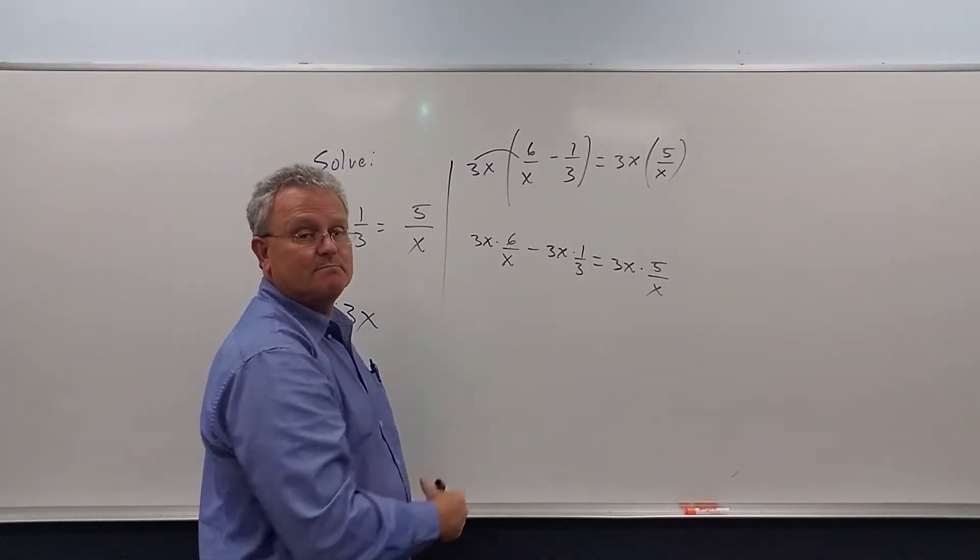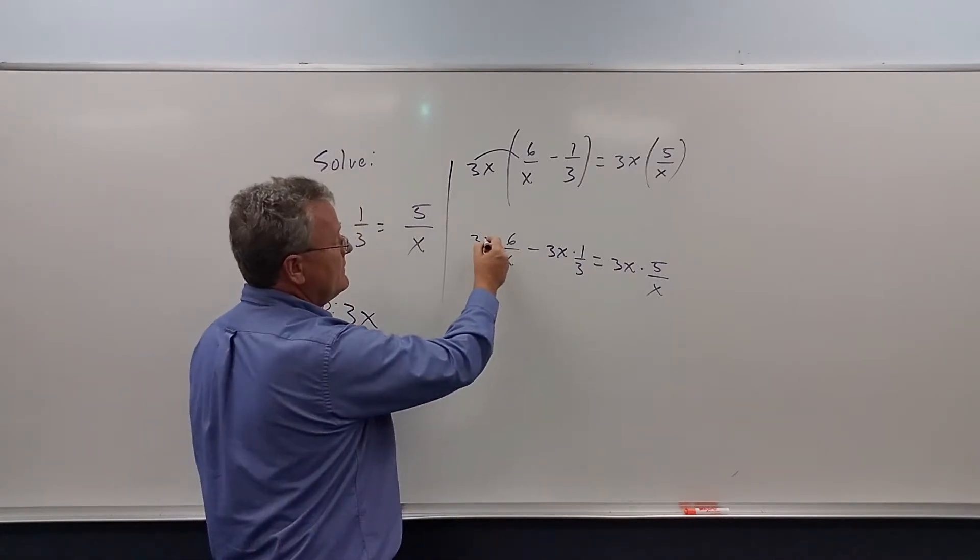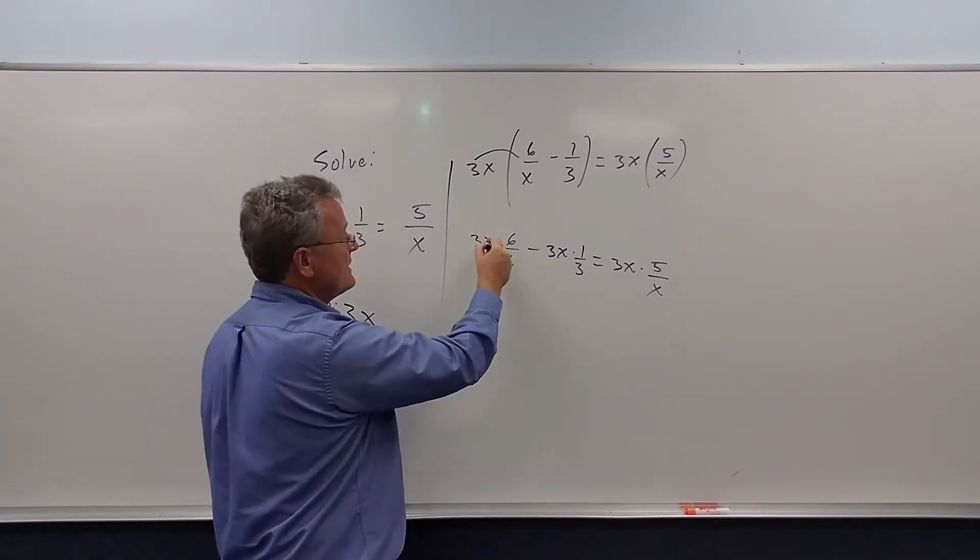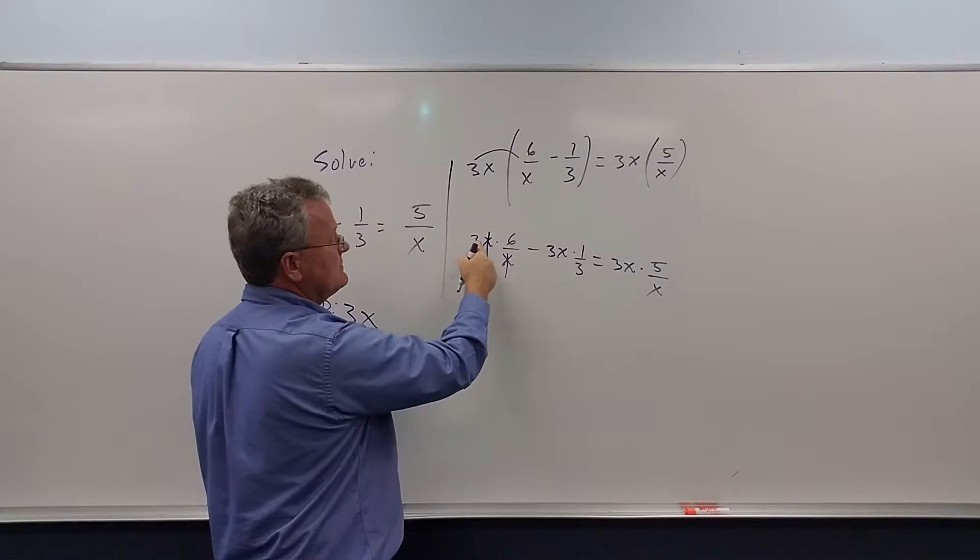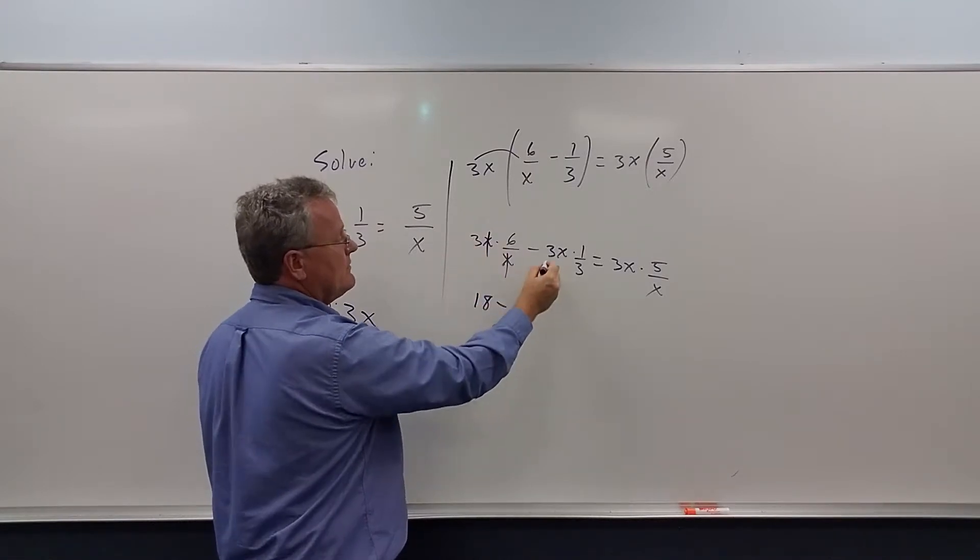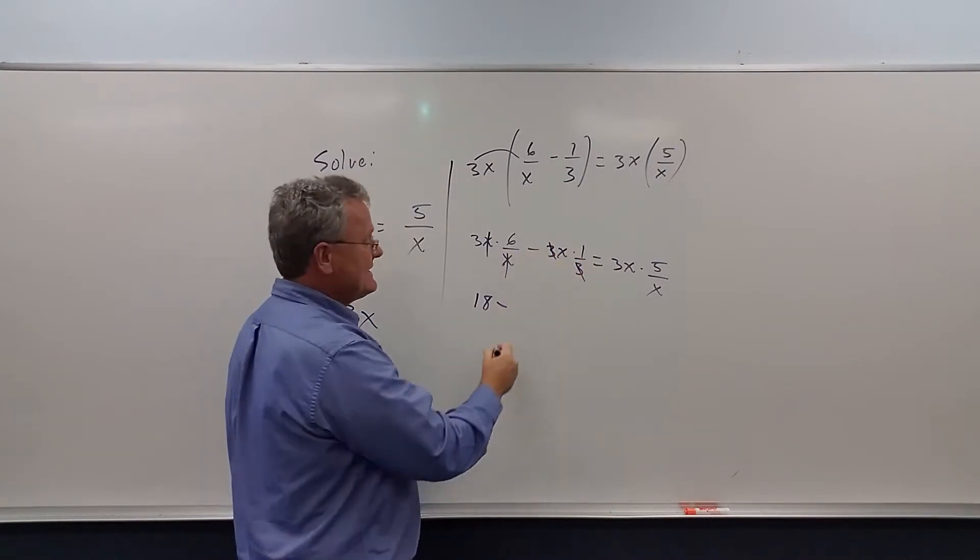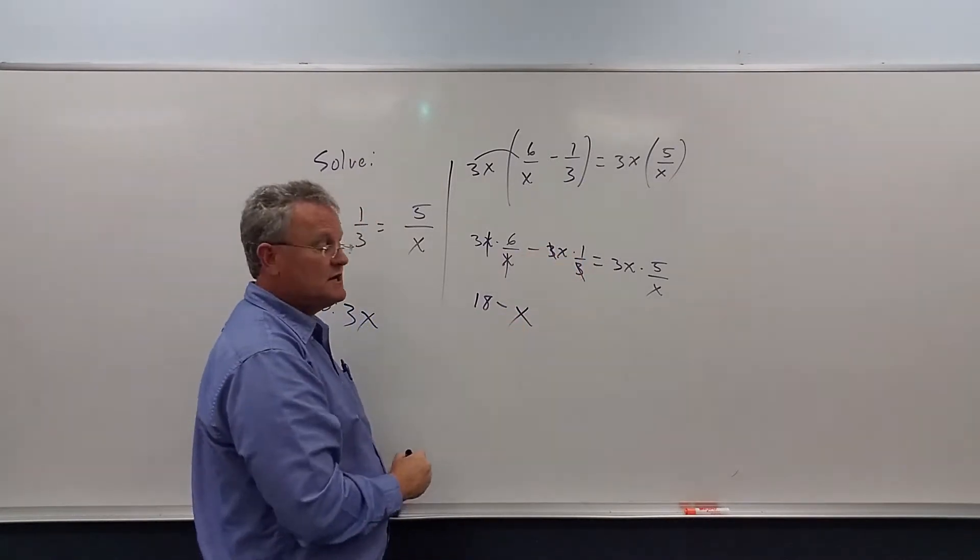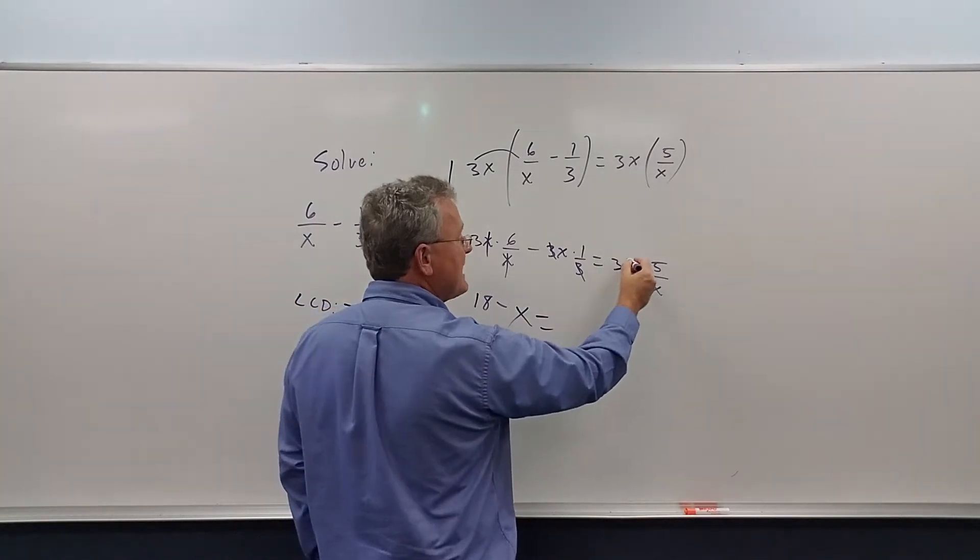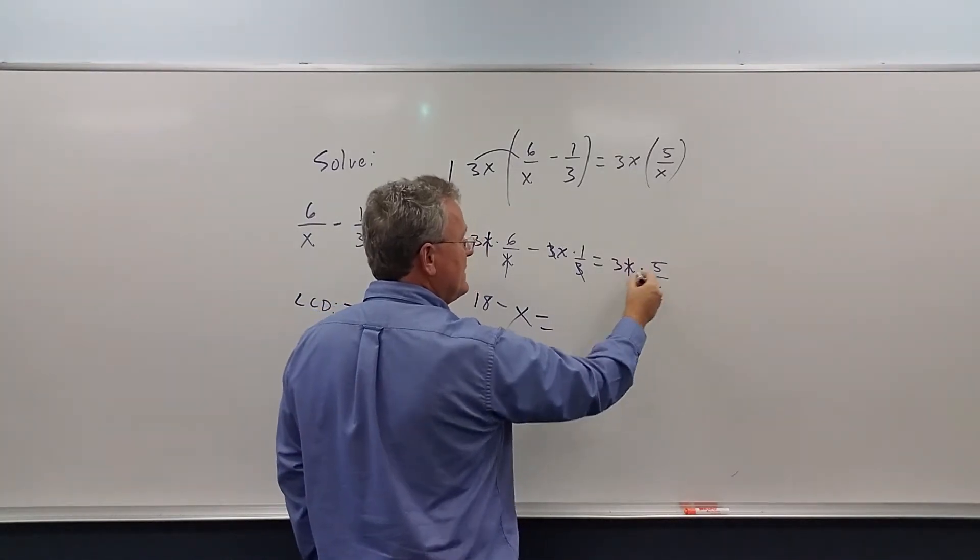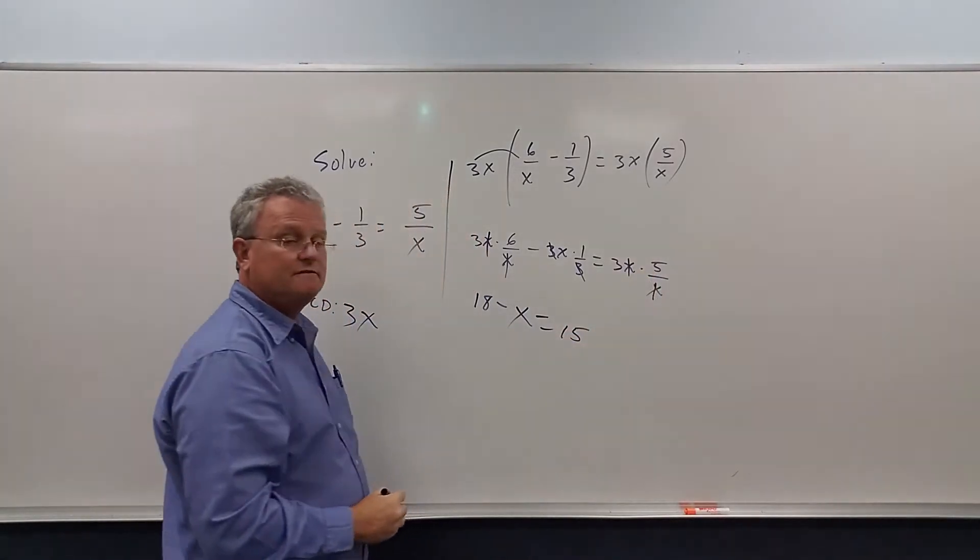Now we simplify each expression. Things are going to cancel. x over x cancels. 3 times 6 is 18. 3 over 3 cancels. We're left with minus x times 1, which is minus x. And on the other side, the x's cancel. And 3 times 5 is 15.